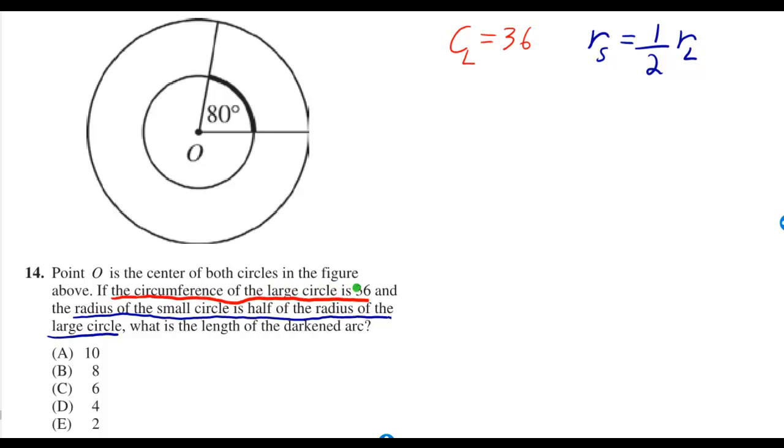When they tell us the circumference of the large circle is 36, we can write this equation right here. When they tell us the radius of the small circle is half the radius of the large circle, then we can write this.